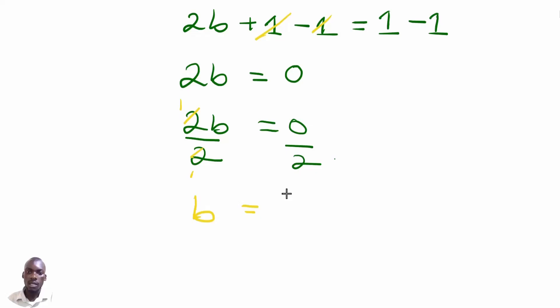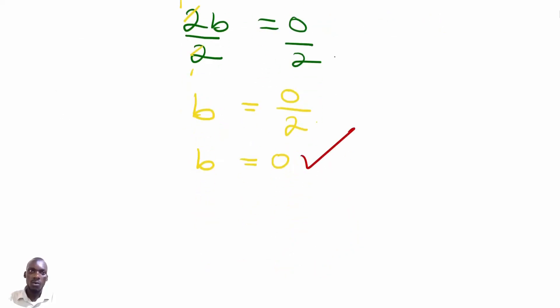Being equal to 0 divided by 2. 0 divided by 2, we are getting our answer to b, that b equals to 0. So it implies that our value of b is 0. Therefore, the value of b equals to 0.